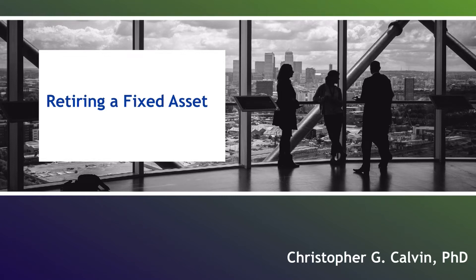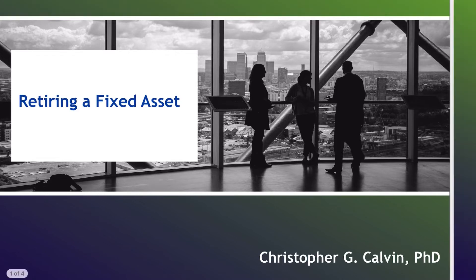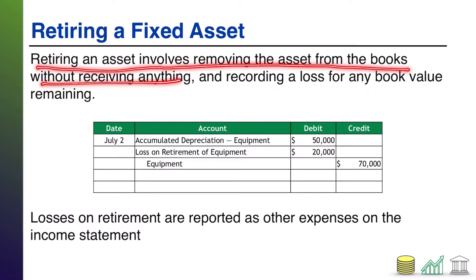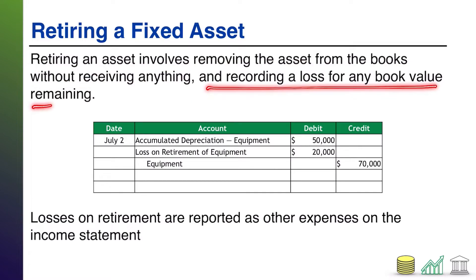In this video I'm going to walk you through the journal entry required for retiring a fixed asset. Retiring is very similar to selling — the only difference is you're not getting anything back. Retiring an asset involves removing the asset from the books without receiving anything and recording a loss for any book value that is remaining at that time.